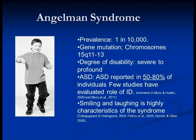Moving on to Angelman syndrome — another rare syndrome group, this time caused by a mutation on chromosome 15, usually associated with severe and profound disability. Again, quite high reports of autism spectrum disorder in this group, up to 80% within the literature. This is really intriguing because one of the very strong characteristics of Angelman syndrome is that the children and adults are very, very sociable — we see high levels of smiling and laughing and strong motivation for social interaction — and that seems very much in contrast to these reports of autism spectrum disorder.